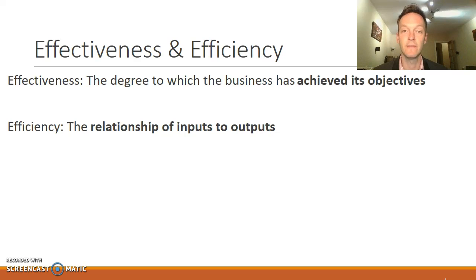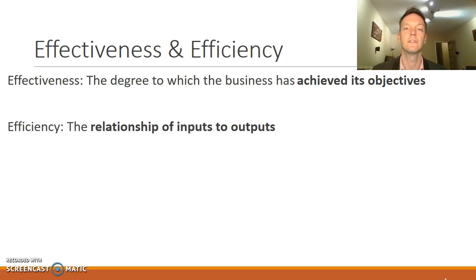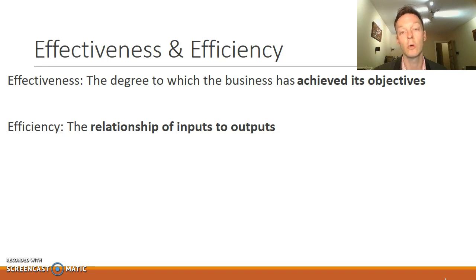Just a reminder about effectiveness and efficiency. Effectiveness is the degree to which the business has achieved its objectives — sales, profit, market share, productivity, customer satisfaction, and so on. Whereas efficiency is the relationship of inputs to outputs. To improve your efficiency, you either need to decrease your inputs or increase your outputs, or in a perfect world, do both.